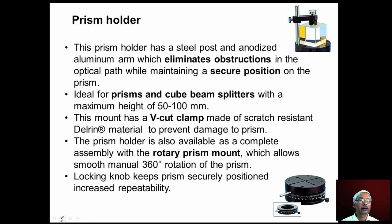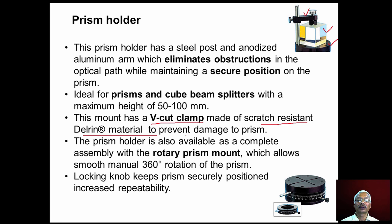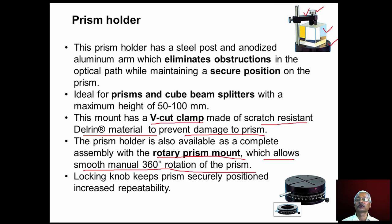Appropriate prism holders should be used. The prism is mounted on a flat surface with a vertical pillar and a V-cut clamp made of scratch-resistant Delrin material to prevent damage to the prism. A screw clamps the prism properly. A rotary prism mount allows smooth manual 360-degree rotation, enabling adjustment of the prism inclination.